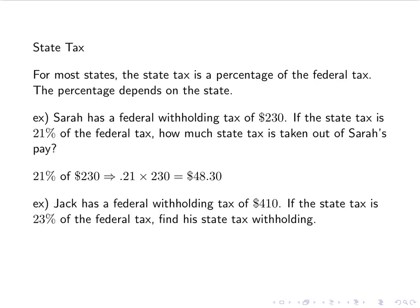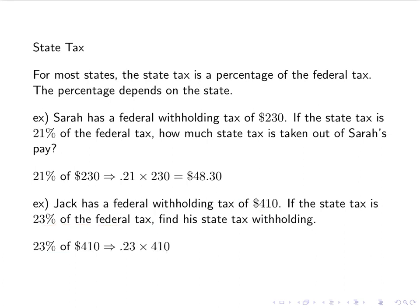Here's another example. Jack has a federal withholding tax of $410. If the state tax is 23% of the federal tax, find his state tax withholding. Again, it's a basic percent problem: 23% of $410, so .23 times $410 gives us $94.30.